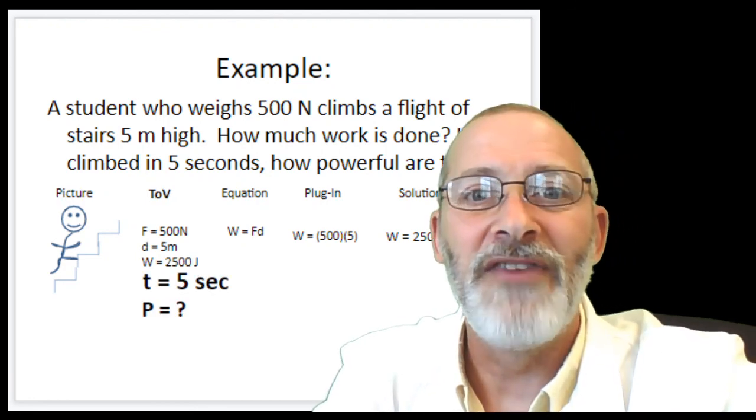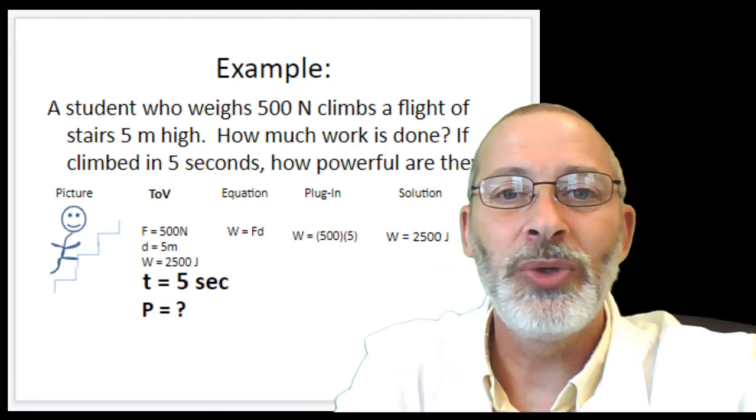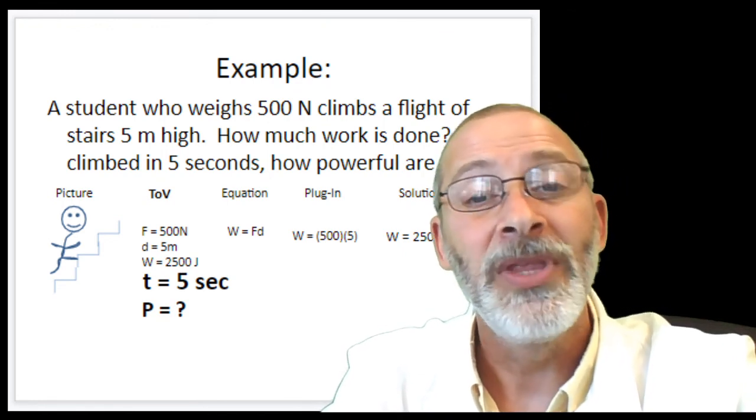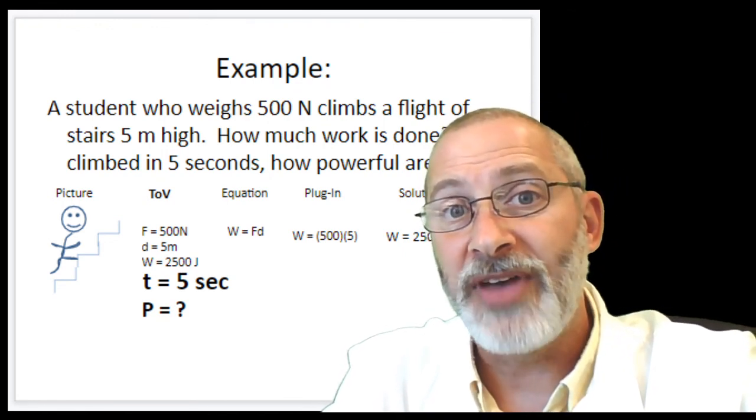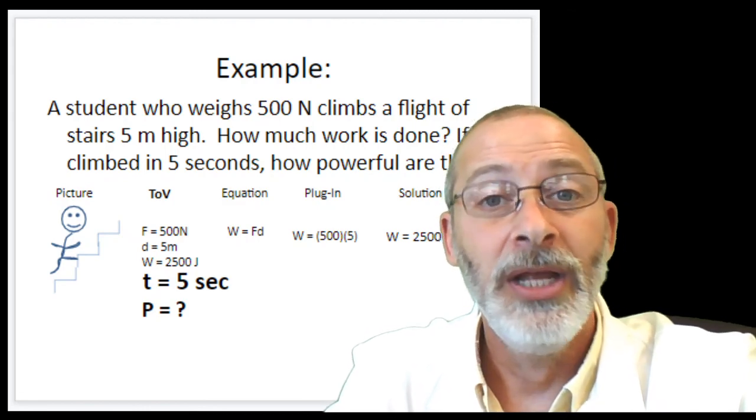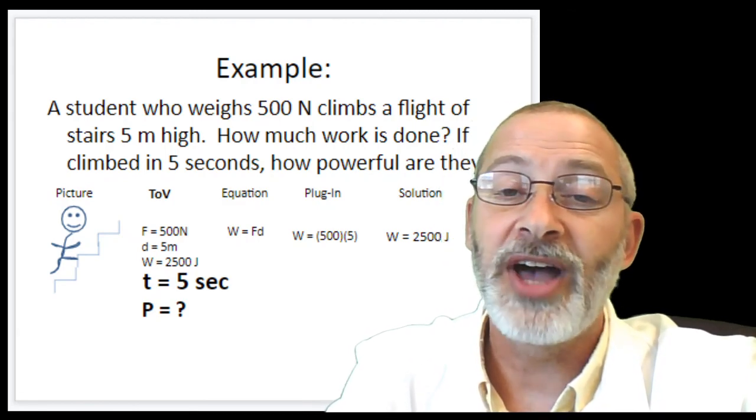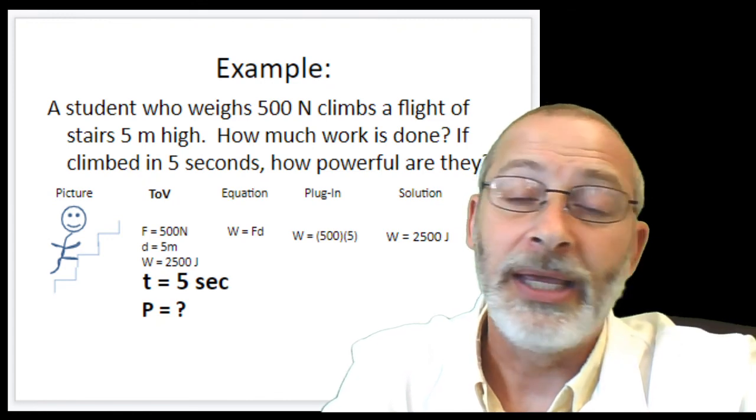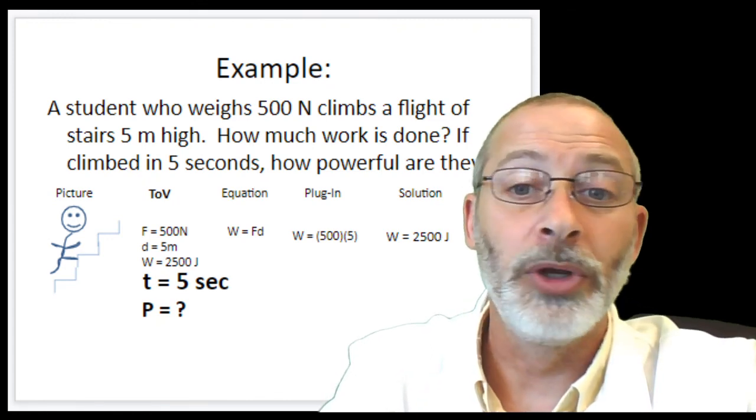Table of values. So, what I'm doing in this example is I'm just adding to yesterday's table of values. I'm adding the information for time, lowercase t equals five seconds, and uppercase P for power equals the question mark. That's what we're looking for.